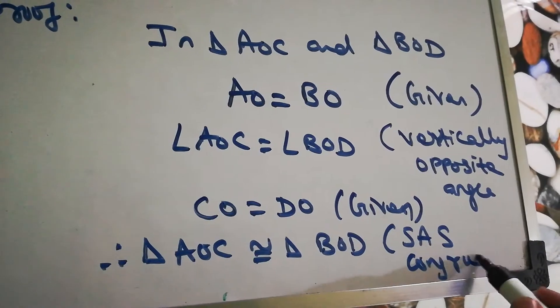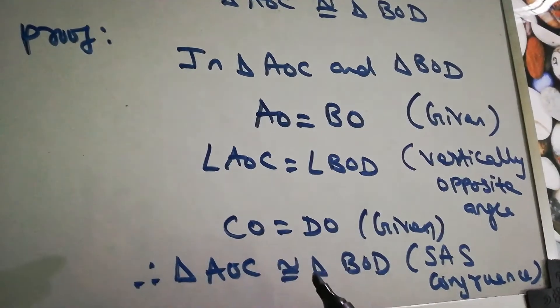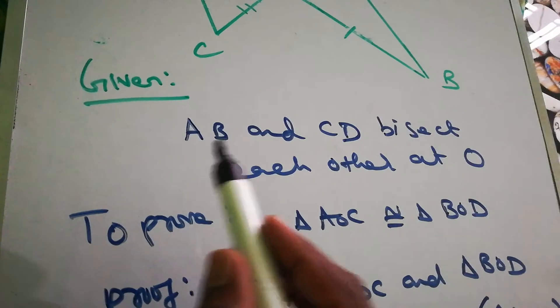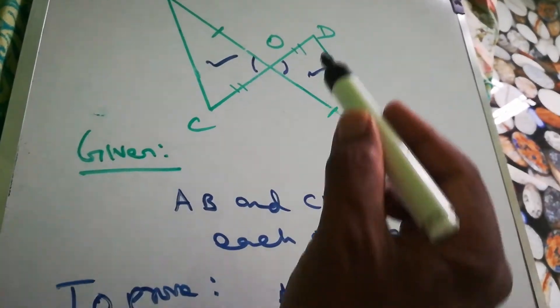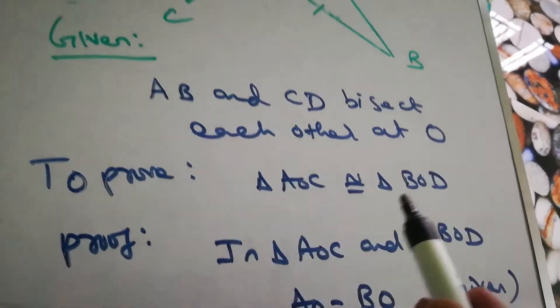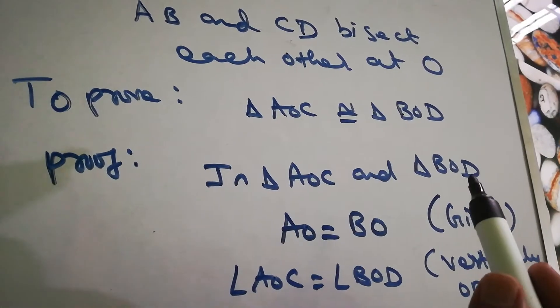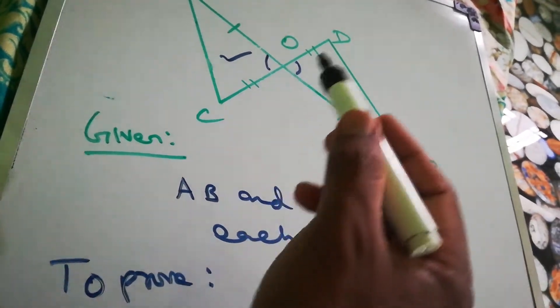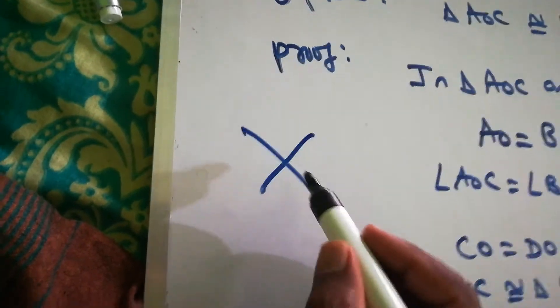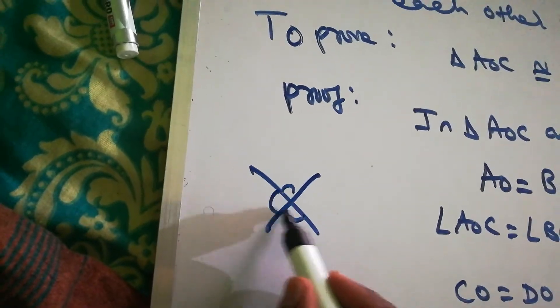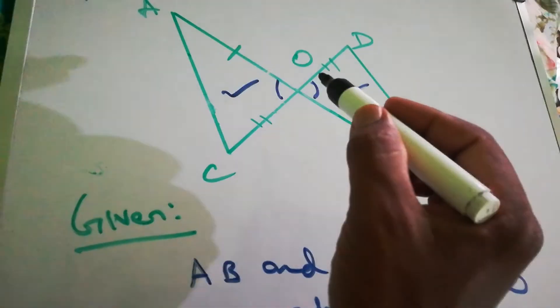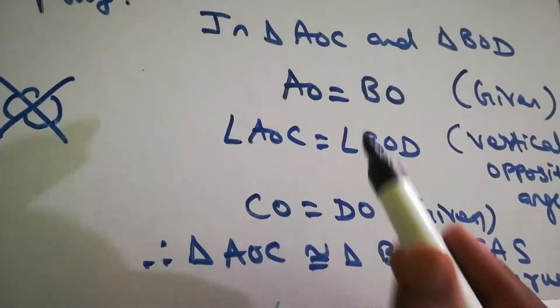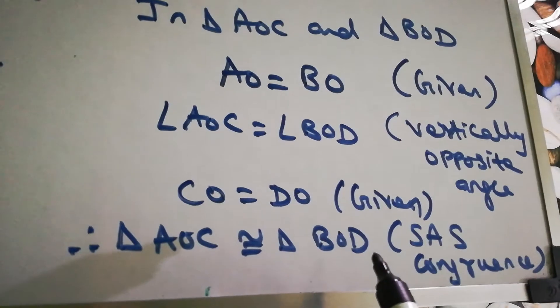AB and CD bisect each other at O, so these two are equal and these two are equal. AO equals BO and CO equals DO are given. This angle and this angle are vertically opposite angles. Therefore, all three parts are equal and the two triangles are congruent.